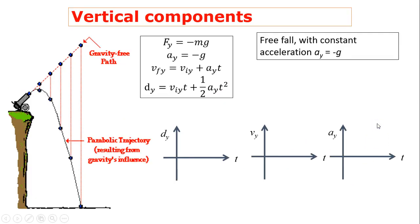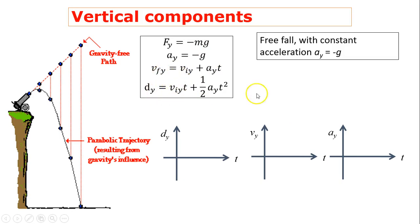In the vertical direction, the only force is gravity, which is downward — indicated as negative. Acceleration is -9.81 m/s². Here are the two equations we can use to find velocity and displacement. In the vertical direction, the projectile is in free fall with constant acceleration.